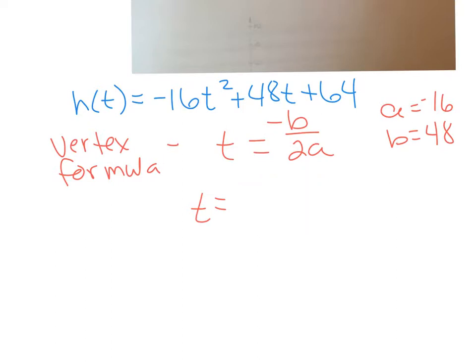You can see I erased this whole thing because I wrote it backwards. b is supposed to be on the top. So this would be -48 over 2 times a or 2 times -16. So -48 over -32. And since we're talking about a word problem we're trying to solve for time here, you can put this into your calculator. It comes out to be 1.5.